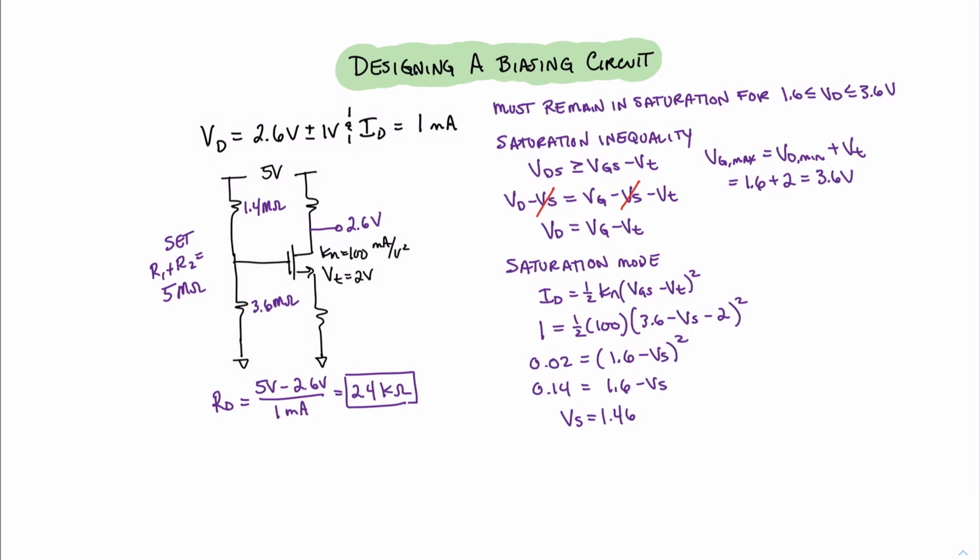Since there's 1 milliamp of current going through the drain and the source resistors, that means that the value of the source resistance must be around 1.46 kilohms. Of course, 1.46 kilohms is not a common value for a resistor. Therefore, oftentimes we have to adjust our biasing a little bit to find reasonable values for commonly available resistances. In this case, we could move this down to 1.4 kilohms.